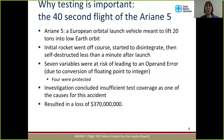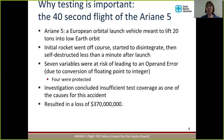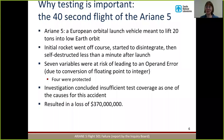The second software testing disaster we'll talk about is the 40-second flight of the Ariane 5. The Ariane 5 was a European orbital launch vehicle meant to launch 20 tons into low Earth orbit — and it was completely unsuccessful because the initial rocket went off course, started to disintegrate in the Earth's atmosphere, and self-destructed less than a minute after its initial launch. The reason was that seven variables in the code were at risk of leading to an operand error due to a conversion of a floating point number to integer. A 32-bit integer can only hold up to about two billion, and they were trying to put numbers much larger than that in their integers. Four of these seven variables were protected by assertions; three were not, and it was one of those three that caused this disaster. The investigation concluded that insufficient test coverage was one of the causes, resulting in a loss of almost 400 million dollars.